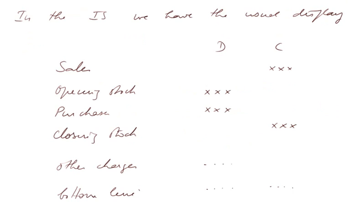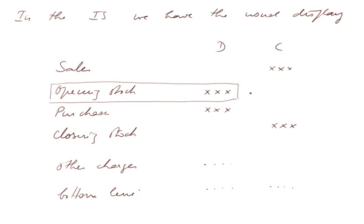In the income statement, we have the usual display with a debit column and a credit column. Sales: a figure in credit. Opening stock: now there is a figure here — it will no longer be zero, but will be the closing stock of the year before as it appeared in the balance sheet; that's why it's in debit. Then purchases of the cycle, and closing stock at the end of the cycle in credit in the IS. Then other charges of the year in debit, and the bottom line of the year, which can be in debit if it's a loss or in credit if it is a profit.